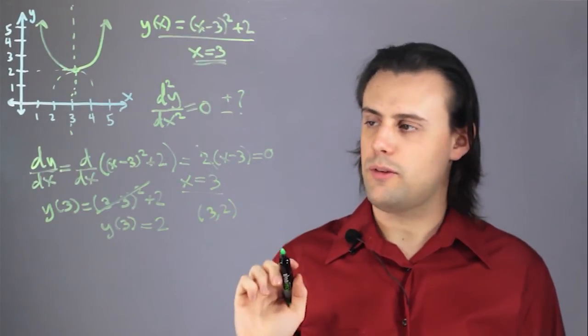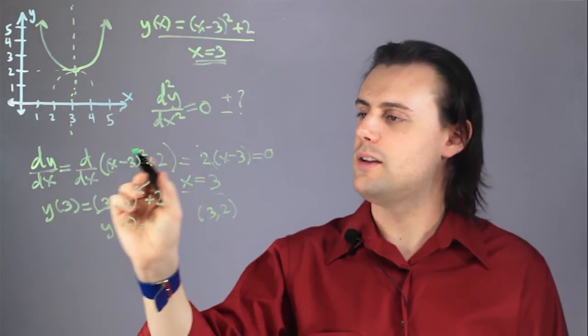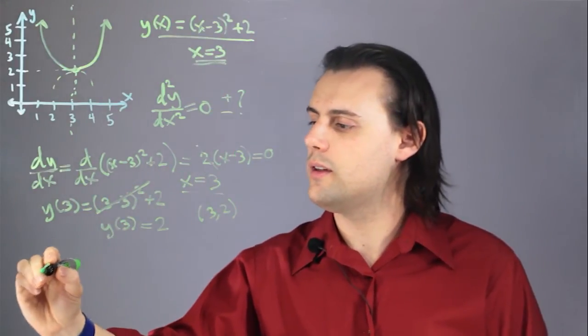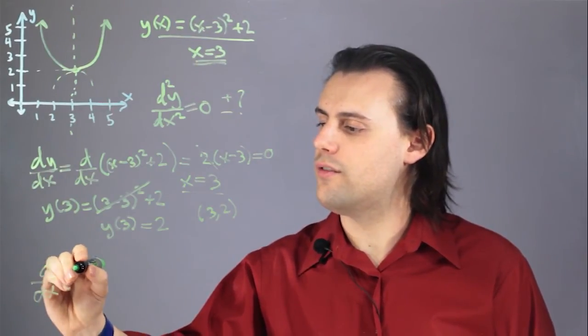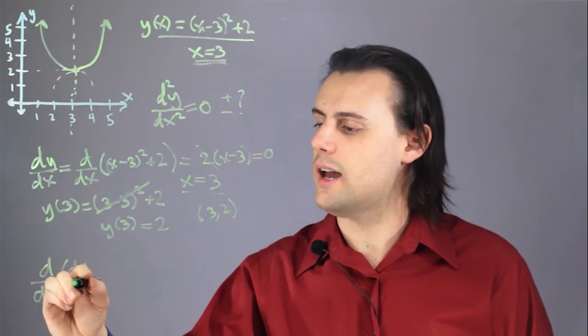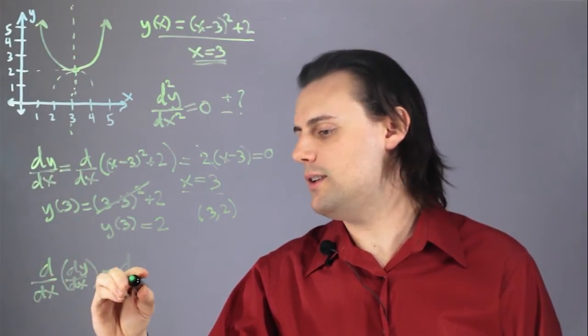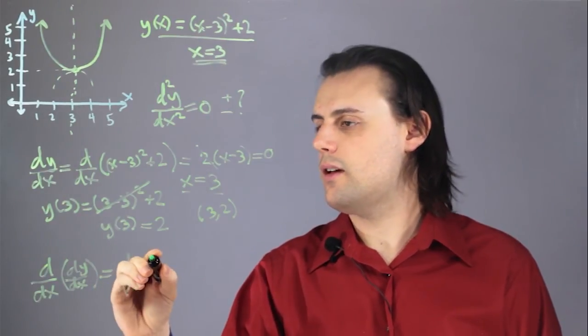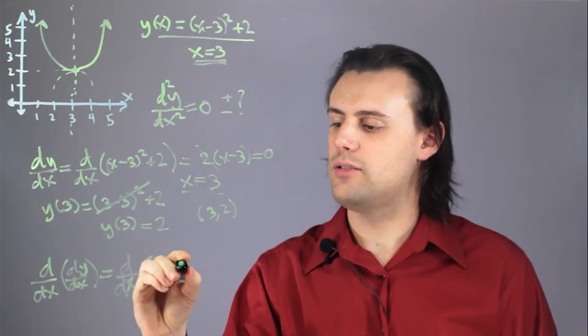Now I just have to determine whether the vertex is a maxima or minima, so I take the second derivative. I differentiate this once more. The derivative with respect to x of dy dx is going to be equal to d dx of 2 times x minus 3...